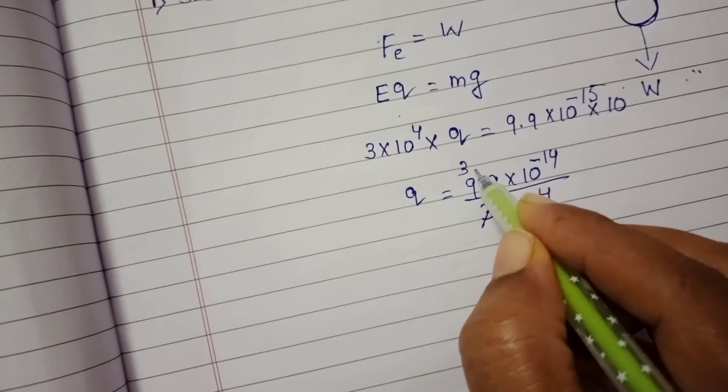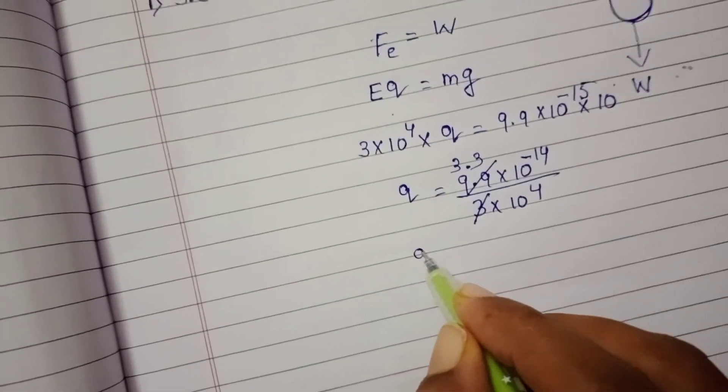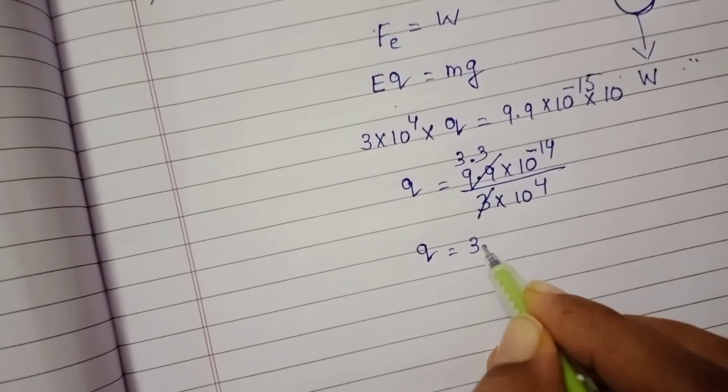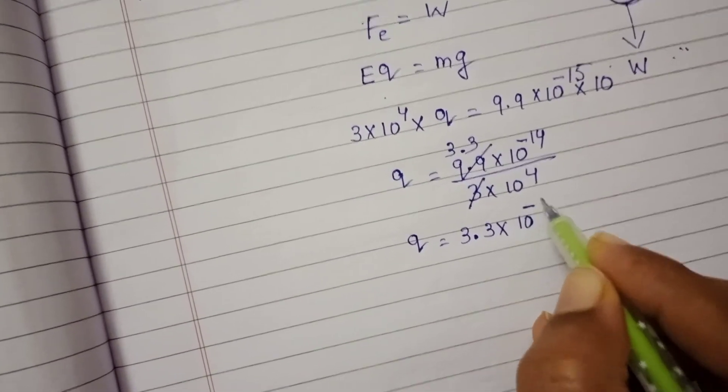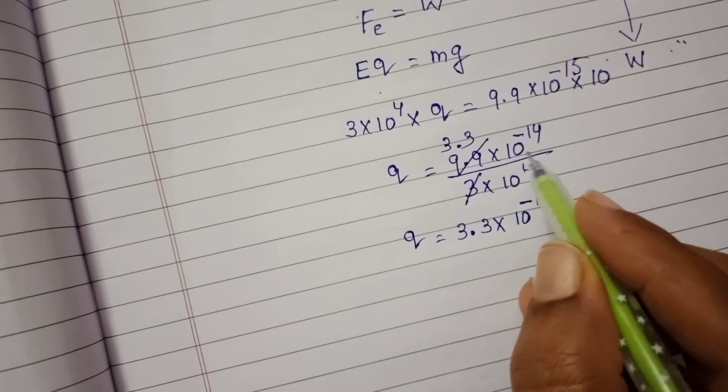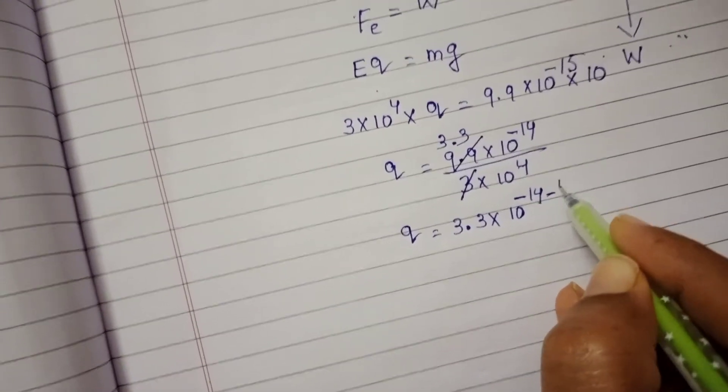3 3s point again 3 3s. Then Q equals 3.3 into 10 power minus 14. This plus 4 goes to numerator becomes minus 4.